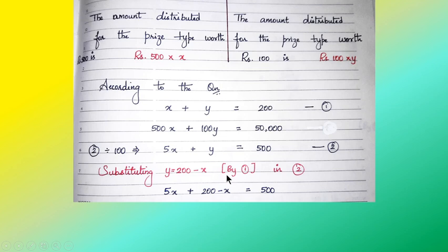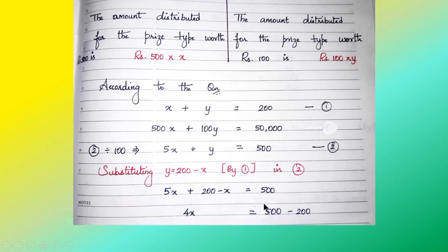By using equation 1, we substitute y equals 200 minus x into equation 2. So we get: 5x plus (200 minus x) equals 500. When we simplify, 5x minus x equals 4x since they are like terms, and on the right-hand side, when 200 goes to the right it becomes 500 minus 200.